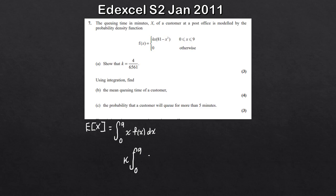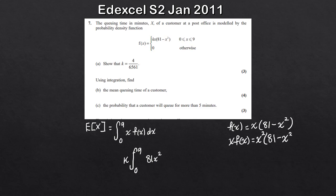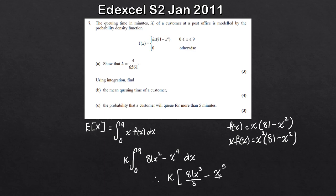The x at the front multiplies f(x): so 81 times x becomes 81x squared, and minus x squared times x gives minus x to the 4. We integrate between 0 and 9: 81x squared integrates to 81x cubed divided by 3, and minus x to the 4 integrates to minus x to the 5 divided by 5. This is all multiplied by k.